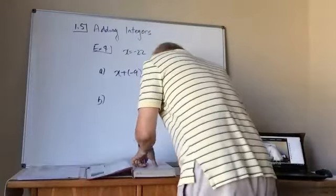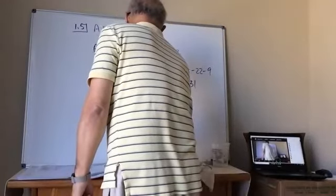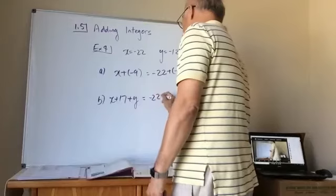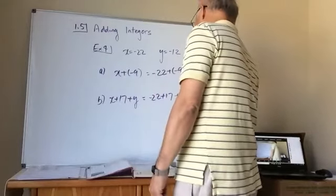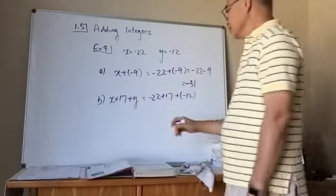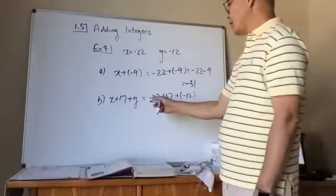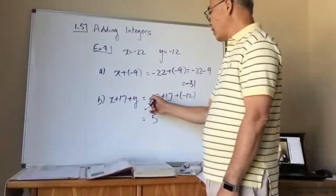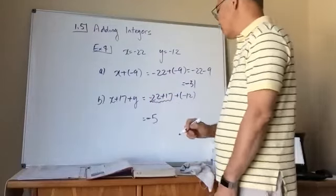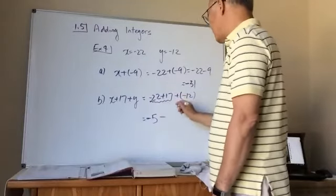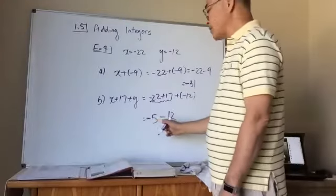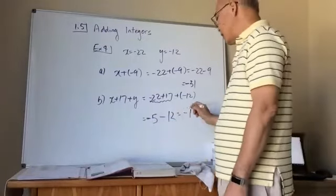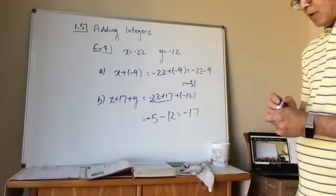Part b: x plus 17 plus y. Substituting: negative 22 plus 17 plus negative 12. First, negative 22 plus 17: different signs, subtract to get 5, and since 22 is larger and negative, it's negative 5. Then negative 5 plus negative 12: same signs, add to get 17, common sign is negative — answer is negative 17.